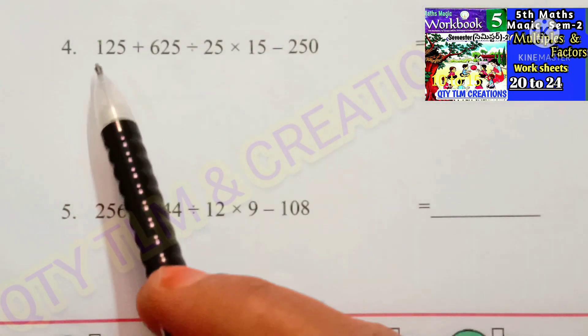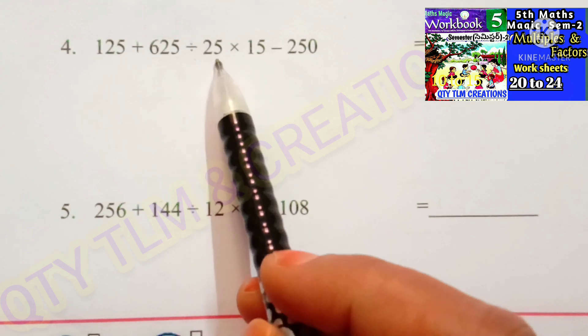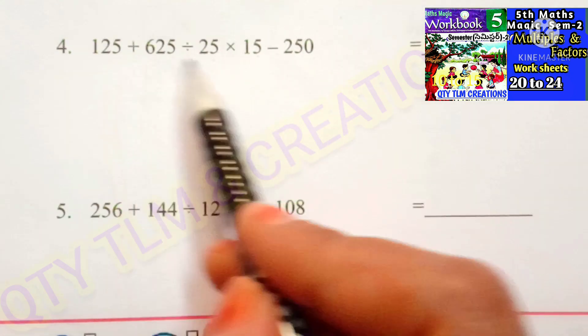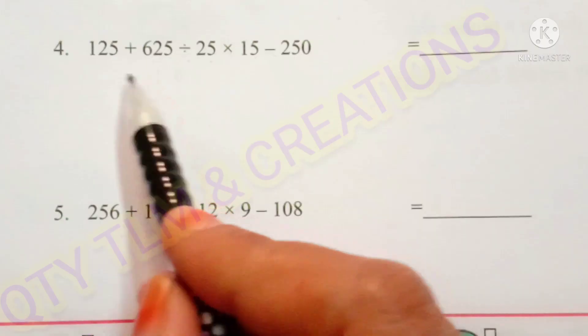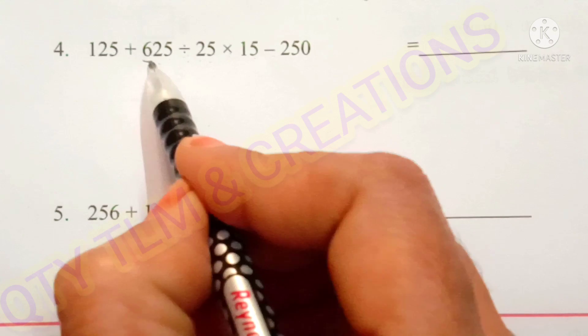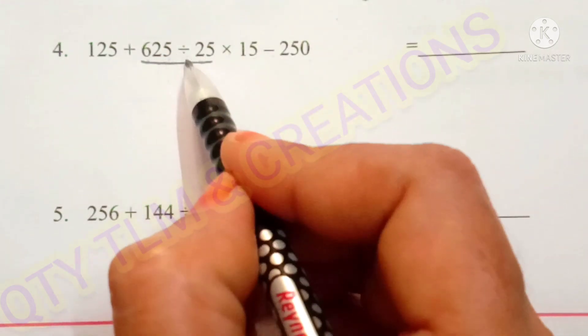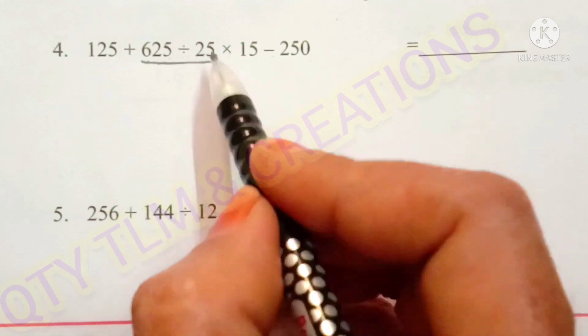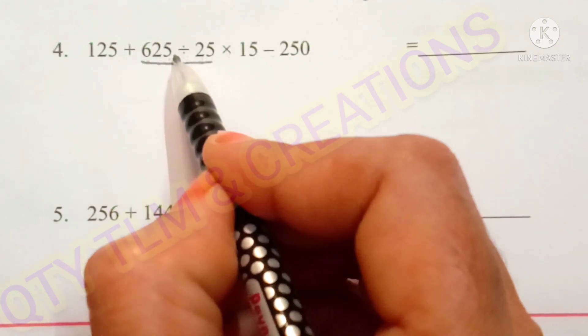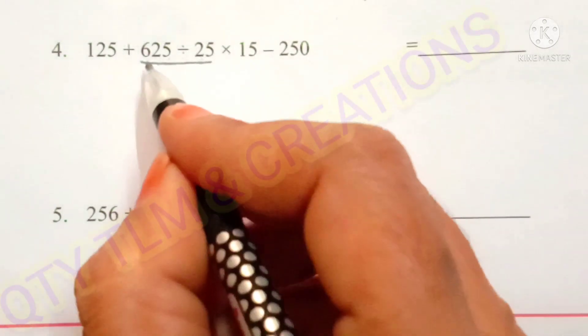Next question: 125 plus 625 divided by 25 into 15 minus 250. Here also there are 4 operations. We perform the division first here. So division, 625 divided by 25. So 25 divides 625 for 25 times. 25 times 25 is 625.